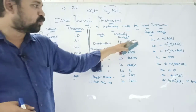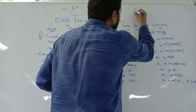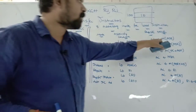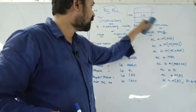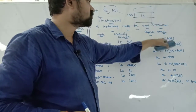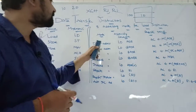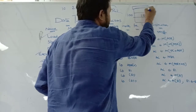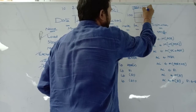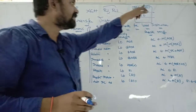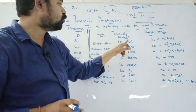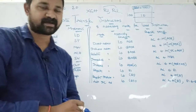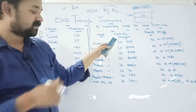In register transfer form, direct addressing is written as 'AC ← M[ADR]'. If ADR is 100 and M[100] = 10, then 10 will be loaded into the accumulator. Direct address means the instruction contains the address, and that address contains the operand.